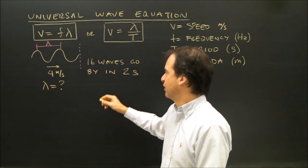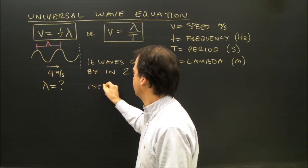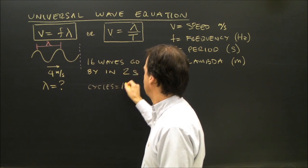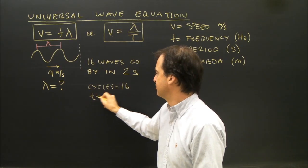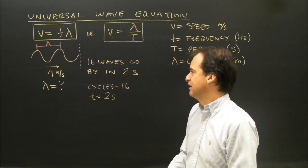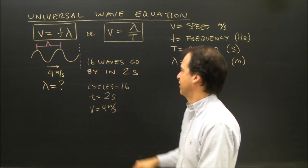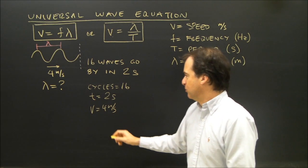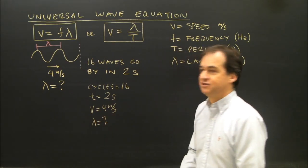Well, the first thing I'm going to do is write down what we're given. We're given that 16 waves, so the number of cycles equals 16. The time it took, not period, that's the time for the 16 cycles, is two seconds. I know that the speed of the wave is four meters per second. And I'm looking for the wavelength.